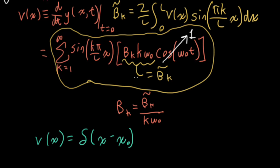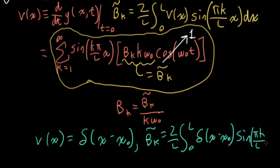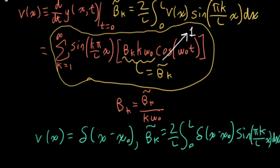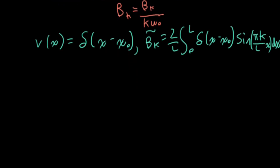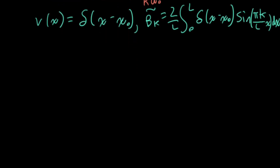So plugging that into the formula up here, we would have beta k tilde equals 2 over l times the integral from 0 to l of delta of x minus x naught times sine pi k over l x dx. Now you should remember from ECE 3084, if you're one of my students at Georgia Tech, that we can make a simplification here with the delta function.